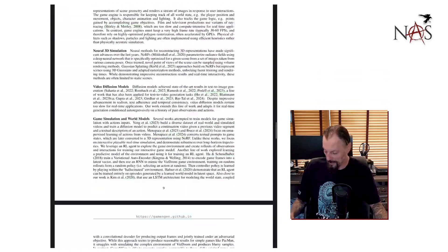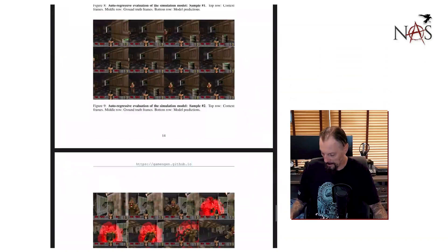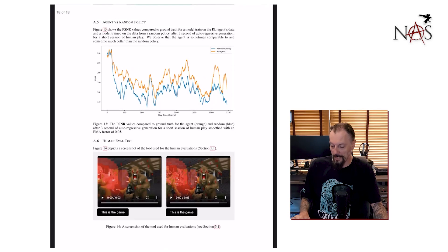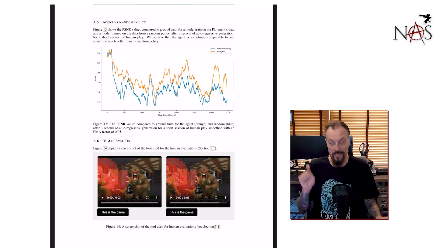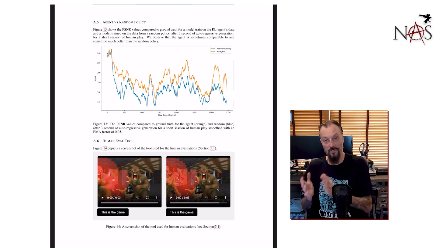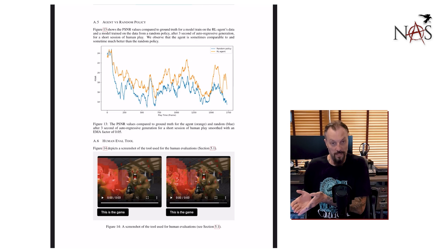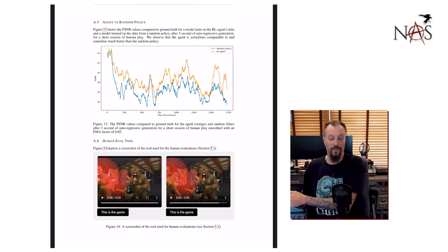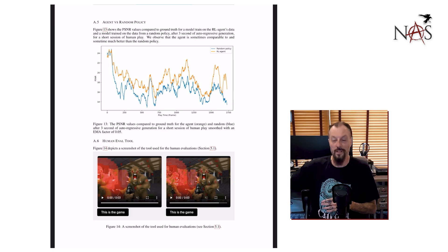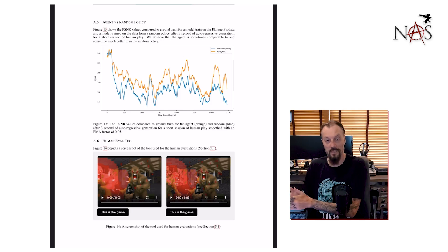One thing I want to point out is the human eval tool that they had. It shows a side-by-side comparison — one is the AI-generated game and one is the actual Doom game — and a human has to say which one is real. That's one of the ways they're training these models to be more and more accurate with game generation. Human eval is really kind of the de facto benchmark, because are you able to fool a human into thinking this is the real thing? If so, the machine gets rewarded — and that's what RL, reinforcement learning, is. You're reinforcing the positives and saying, okay, this is the right one, continue doing it more like this.